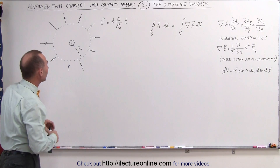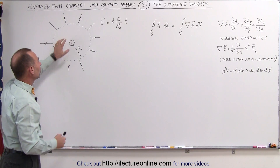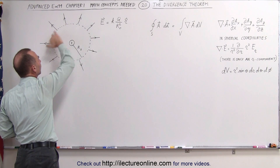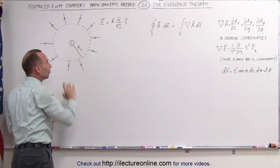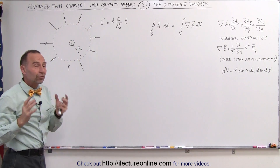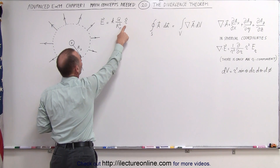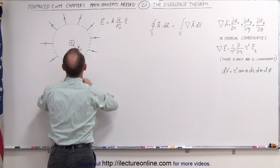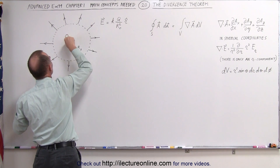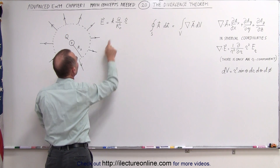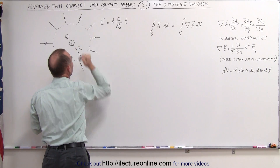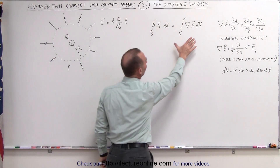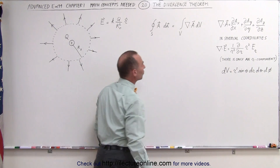Here's an example. Let's say we have a point charge and we draw a Gaussian surface around it, so that we want to know the electric field on the surface of the Gaussian surface. The electric field in the R direction will always be equal to K times Q, the size of the charge, divided by the distance from the charge to the edge of the Gaussian surface. Let's go ahead and try to solve the problem using the right side of the equation.